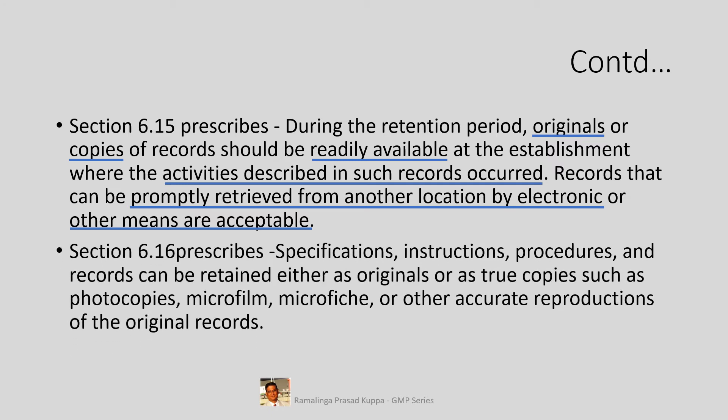Section 6.16 prescribes that specifications, instructions, procedures, and records can be retained either as originals or as true copies — such as photocopies, microfilm, microfiche, and other accurate reproductions of the original records. A true copy is a photocopy of the original or a transcribed document with a verification signature. A stamp as 'true copy' may be affixed at the bottom of such documents.